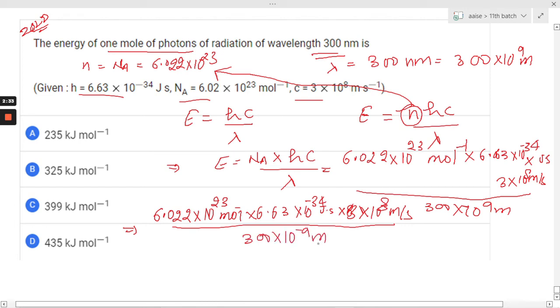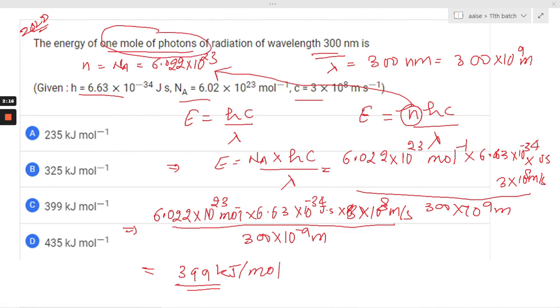And when we simplify it, we are going to get 399 kilojoule per mole. So this much energy will be there for one mole photons. The answer is option C.